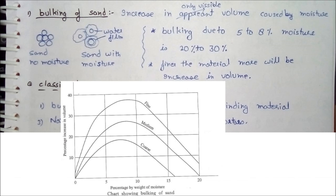Because mortar uses sand, sand has a very particular property: bulking of sand. What is bulking of sand? By addition of 5 to 8% moisture or water, the sand volume increases up to 20 to 30%. This is a vigorous increase in the volume of sand. As the material is finer, the volume increase with moisture is greater. Moisture forms a film around sand particles, which helps increase the volume of sand.